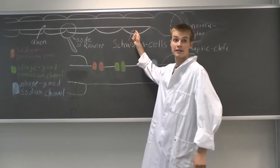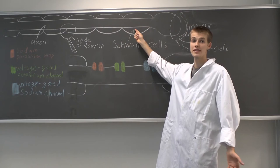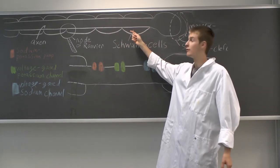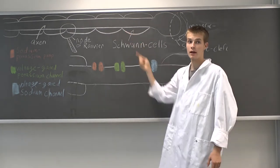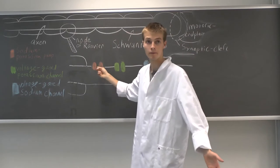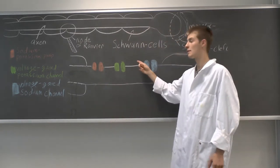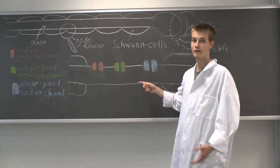Schwann cells surround the axon to insulate it and allow a fast and energy efficient transmission. The gaps between Schwann cells are called nodes of Ranvier. Let us look closer at these nodes of Ranvier. Here the axon can be accessed from the outside. In the cell membrane we have different proteins.